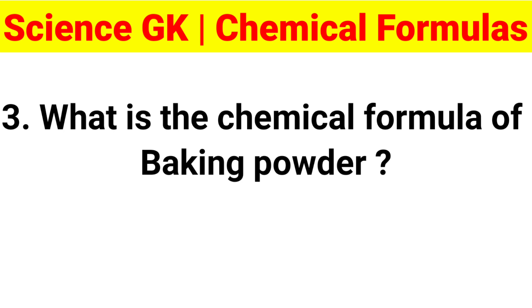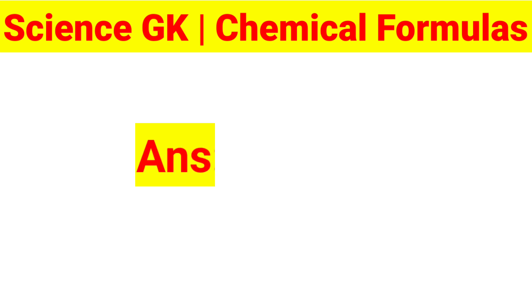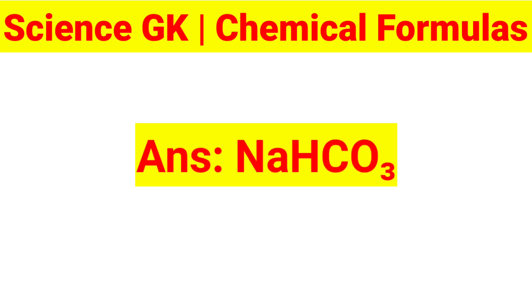Question 3: What is the chemical formula of baking powder? Answer: NaHCO3.